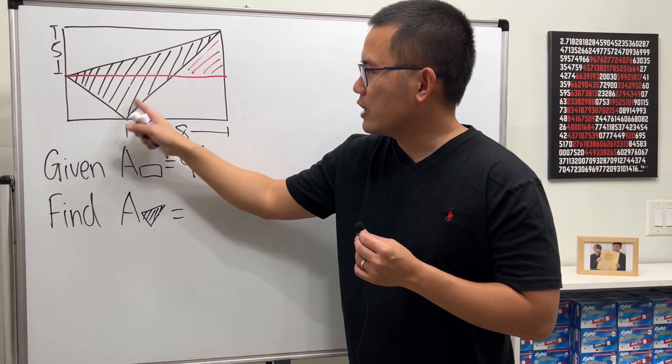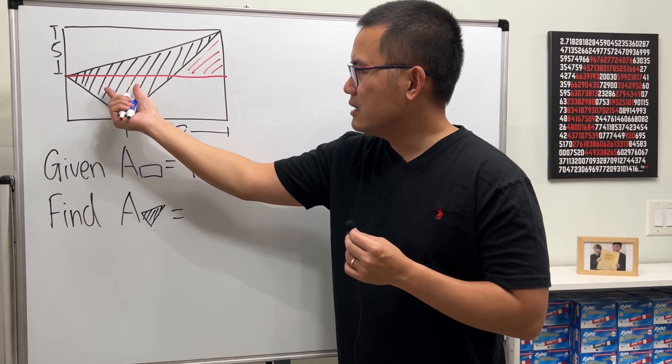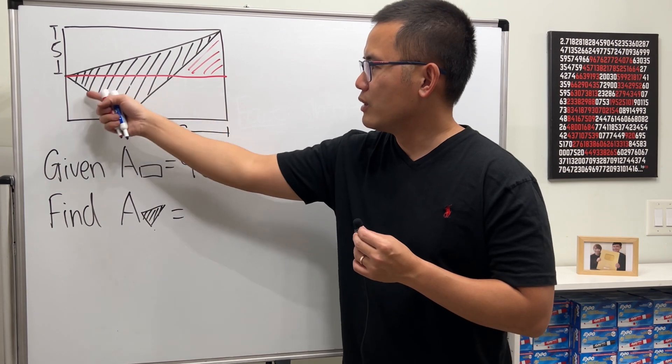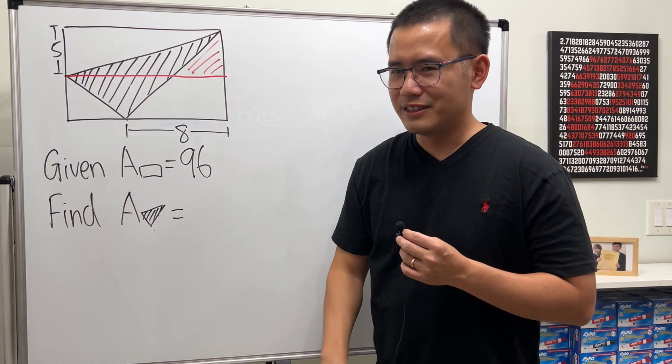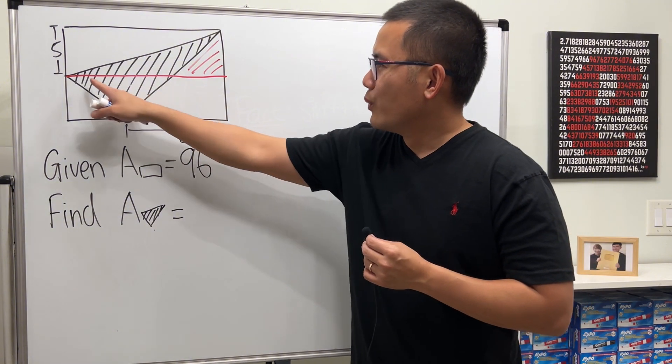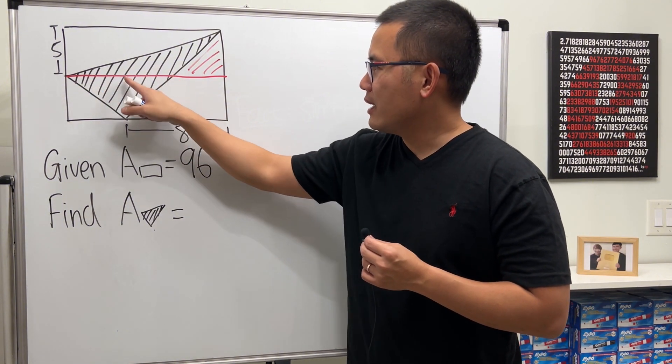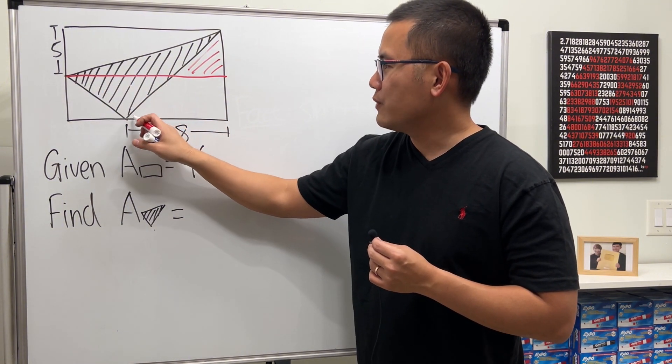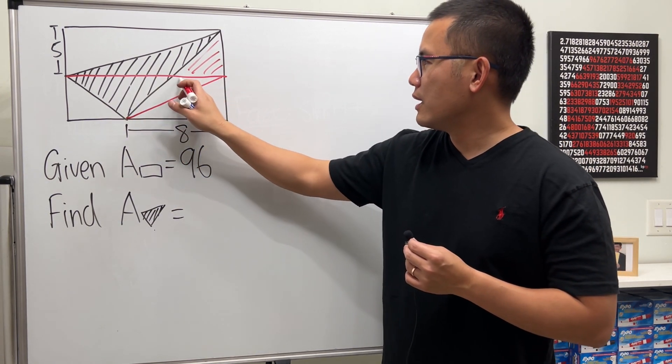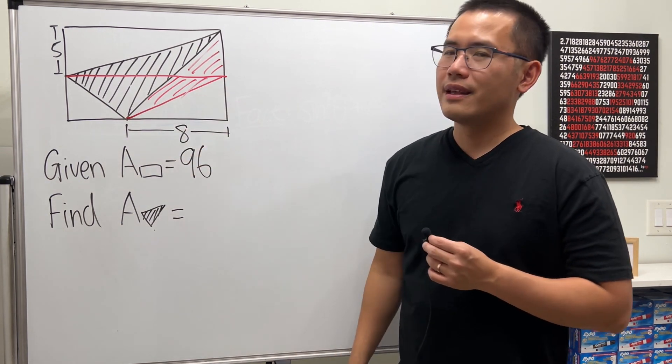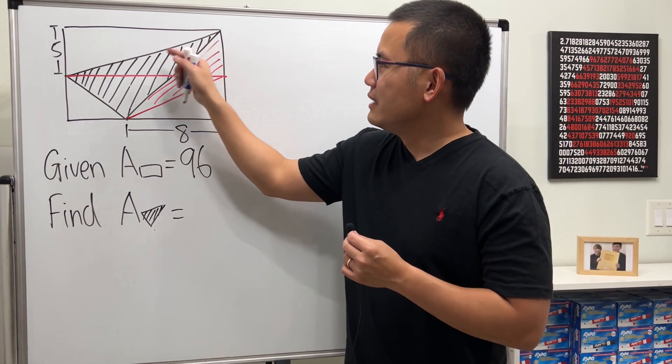But if you look at the shaded region here, is this half of the bottom rectangle? No, but how can we make it though? Check it out, we have from here to here already and this is the triangle. But what if I create a triangle like this from here to here?